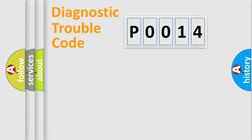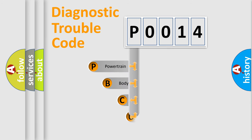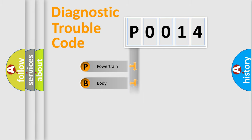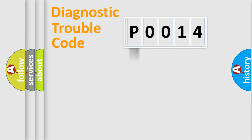First, let's look at the history of diagnostic fault code composition according to the OBD2 protocol, which is unified for all automakers since 2000. We divide the electric system of an automobile into four basic units: Powertrain, body, chassis, and network.